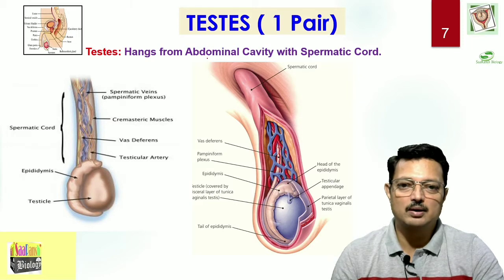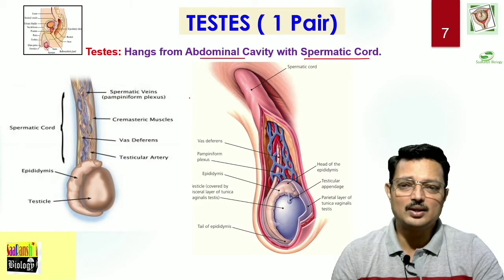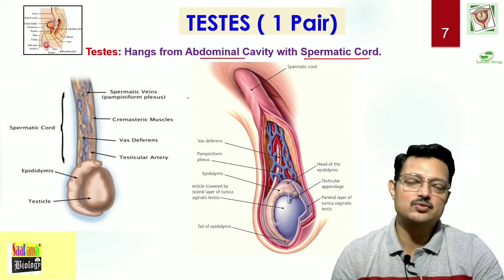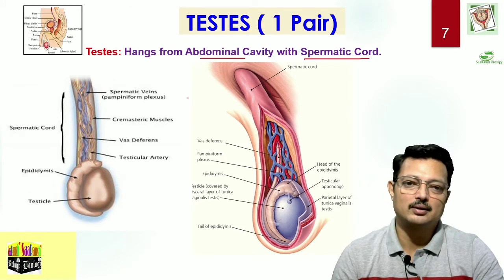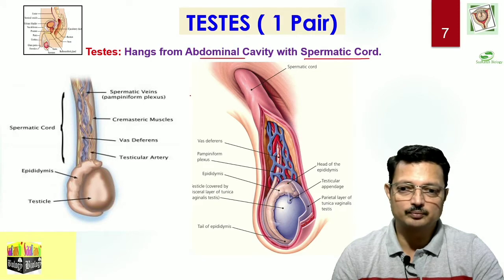When we talk about the testes, they hang from the abdominal cavity with the help of the spermatic cord, and the testes themselves are located outside the abdominal cavity — they are extra-abdominal. We will come to understand why they are extra-abdominal in just a moment.